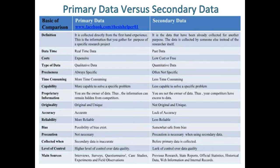Primary data is more time-consuming while secondary data is less time-consuming. Primary data is more capable of solving a specific problem while secondary data is less capable of solving a specific problem. In proprietary information of primary data, you are the owner of the data.